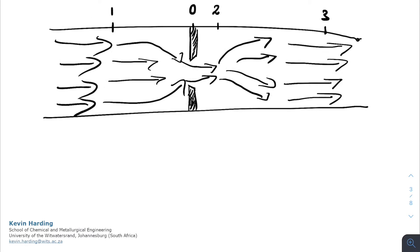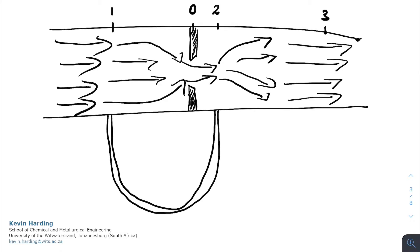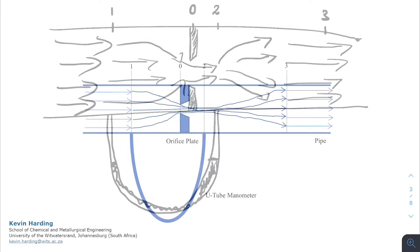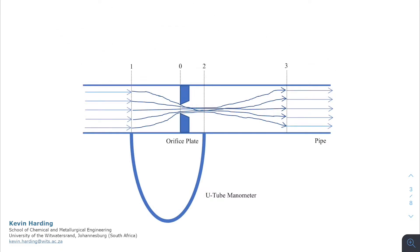In order to calculate the pressure, we're going to add a U-tube manometer between point 1 and point 2, so we can use mercury or some other manometer fluid to measure the pressure across the orifice meter. Neatening up the diagram, we now have points 1, O, 2, and 3, as well as our U-tube manometer across the orifice plate.